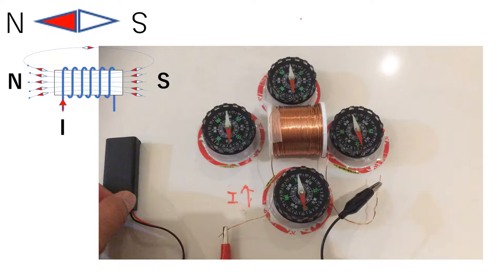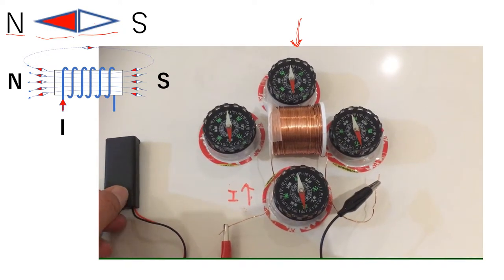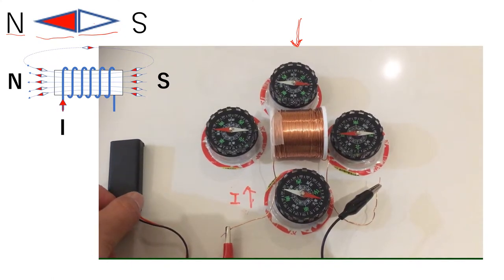This compass shows the direction. Remember, the N is the red side and white is the S side. When I turn on this switch, the induced magnetic field is larger than the natural magnetic field.